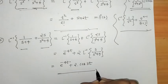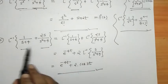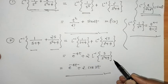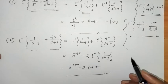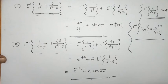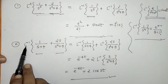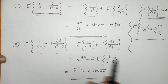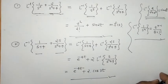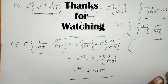So the answer to the second example is e^(−4t) + 2·cos(3t). We have seen all these elementary inverse Laplace transforms in previous lectures. In this way we distribute L⁻¹ separately on the functions using the linearity property. That's it for now — see you in the next video, thank you, keep watching.